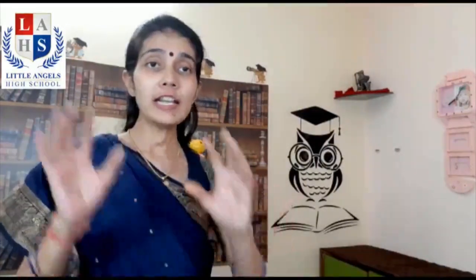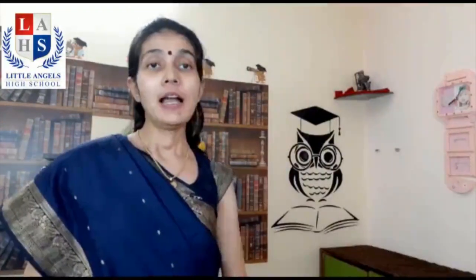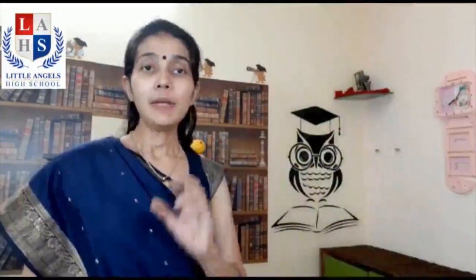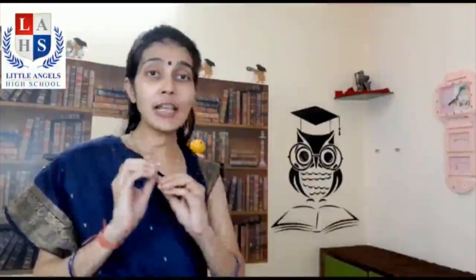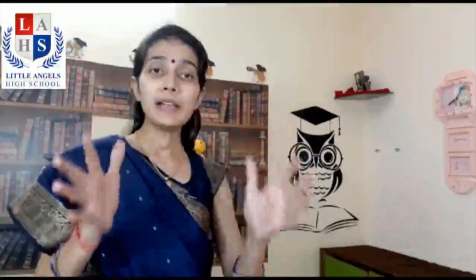Do you know, students, after preparing food the plants store extra food in different parts? For example, the mango tree stores food in fruits, the pea plant stores food in seeds, beetroot and carrot store food in their roots, cauliflower stores food in its flower, sugarcane stores food in its stems, and cabbage stores food in its leaves.